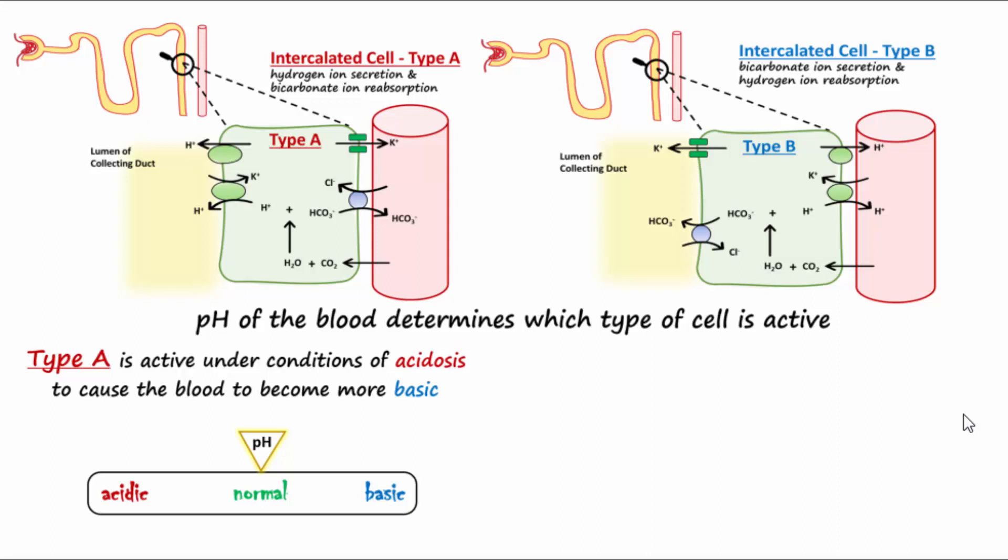While in conditions of alkalosis, the type B cells that secrete bicarbonate ion into the nephron are active to cause the blood to become more acidic.